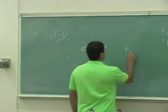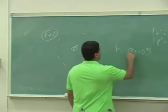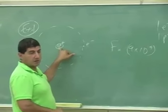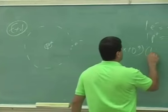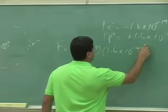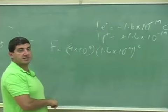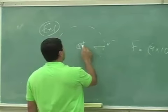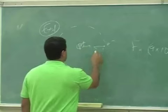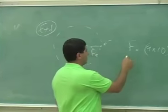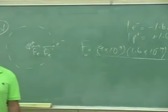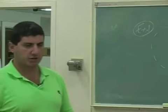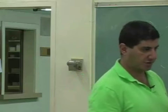The electrical force is going to be 9 times 10 to the ninth — that's the K — times the charge of each, since it's the same, then you square it: 1.6 times 10 to the minus 19, squared. And since they're oppositely charged, that means the force is attractive. The proton attracts the electron, the electron attracts the proton. So this is the electrical force divided by their distance squared. The distance between the electron and the proton in a hydrogen atom is roughly of the order of an angstrom, which is 10 to the minus 10 meters.